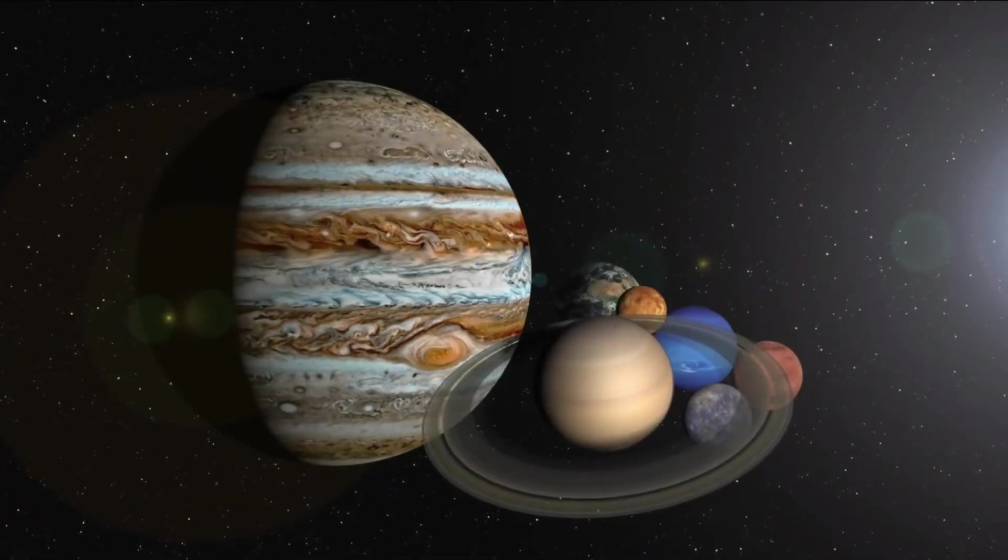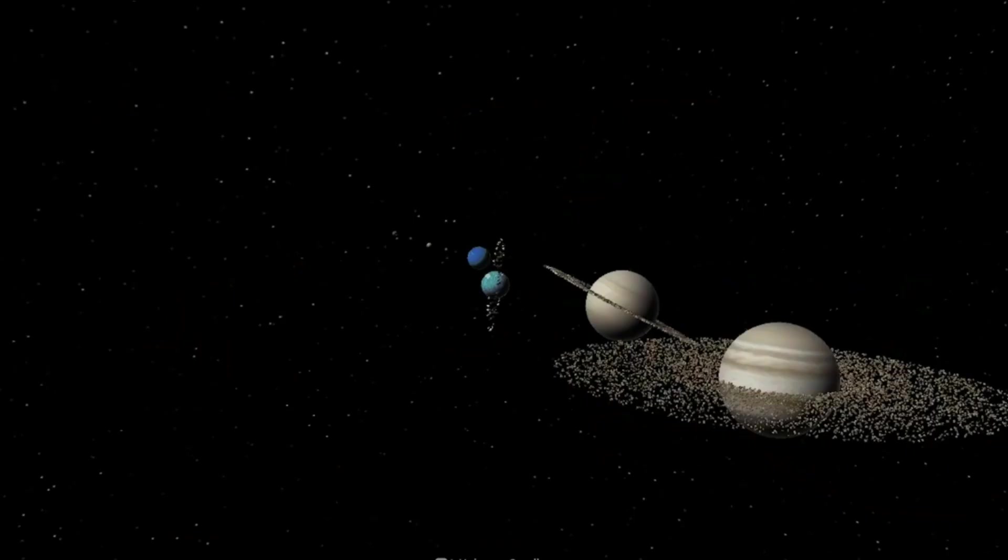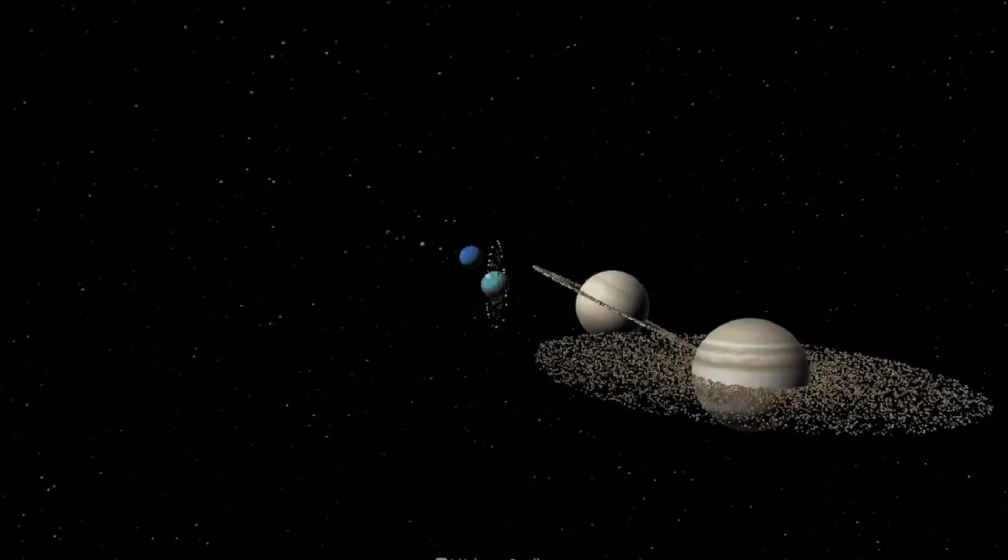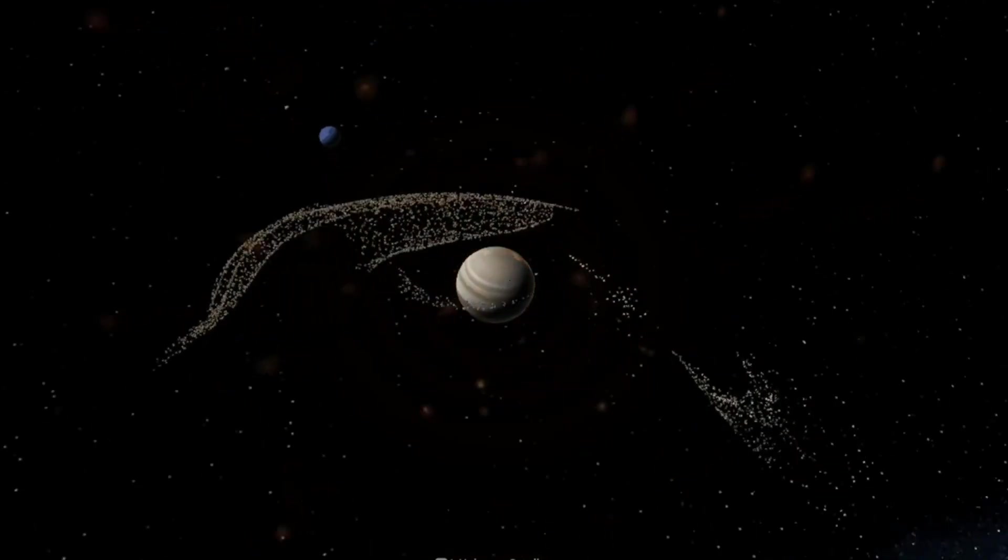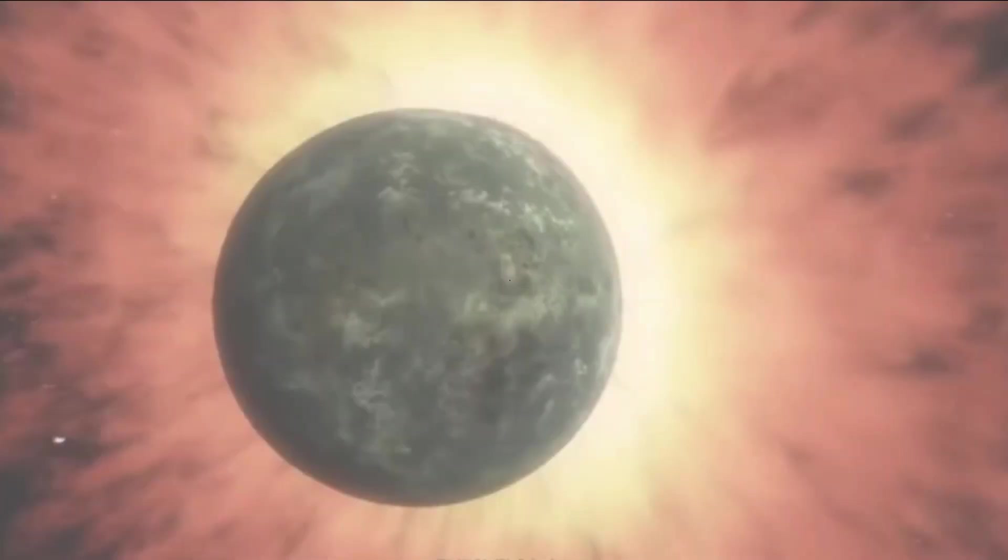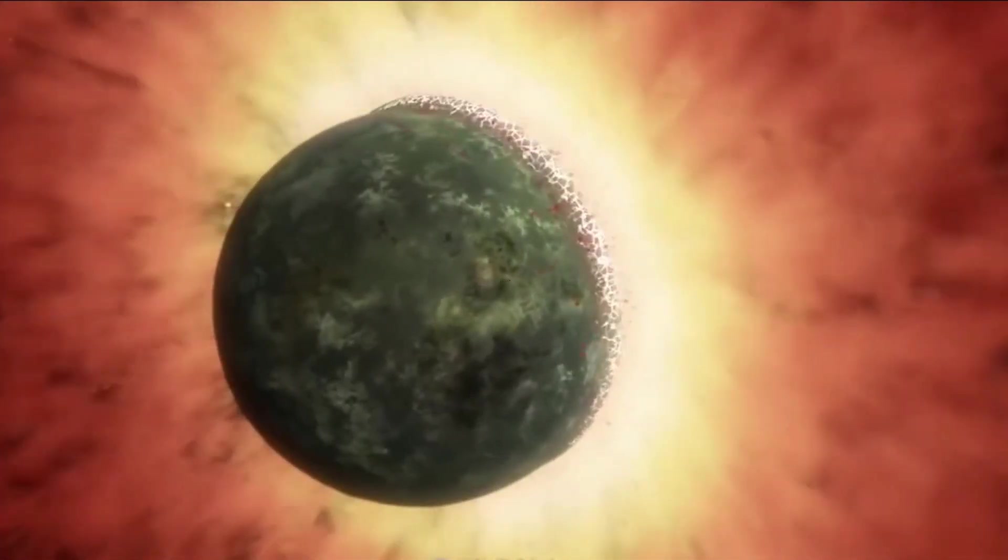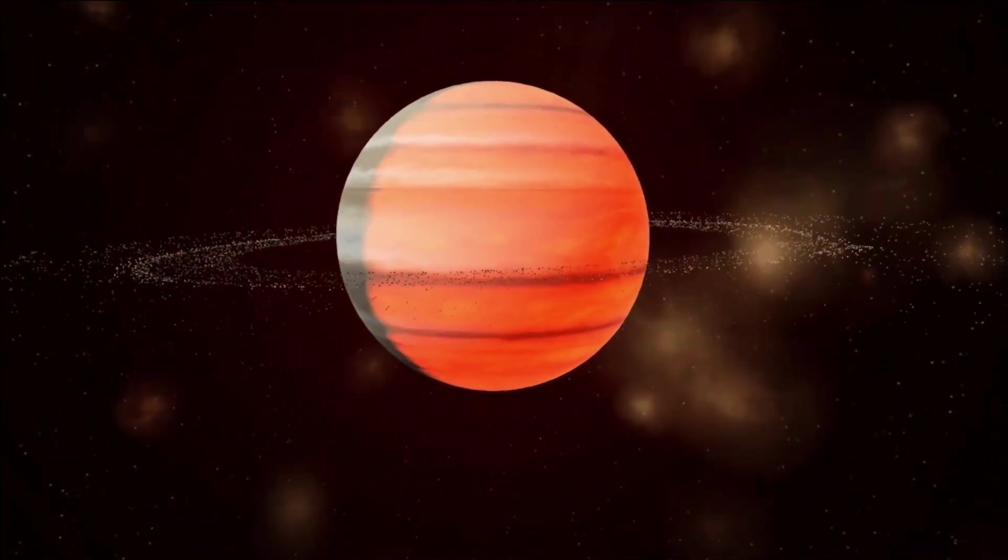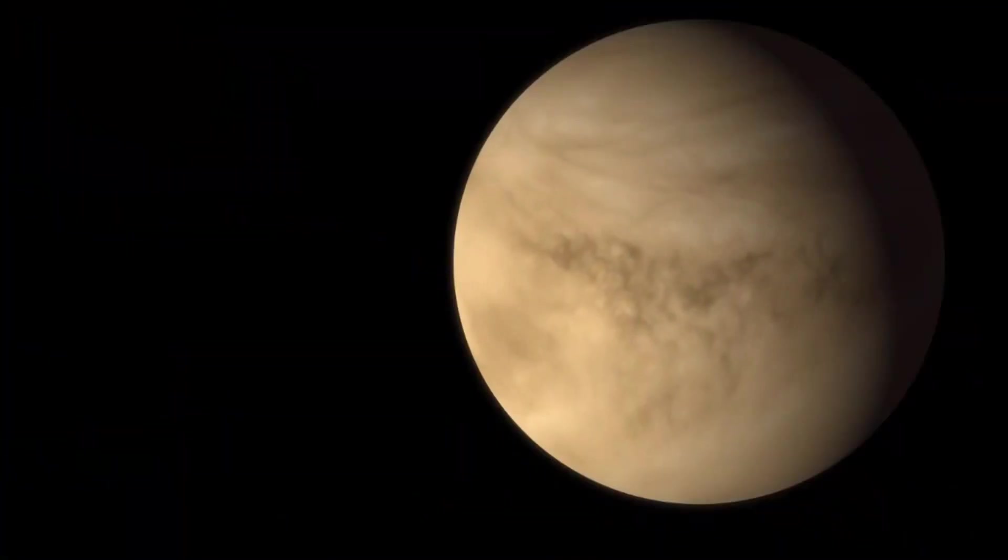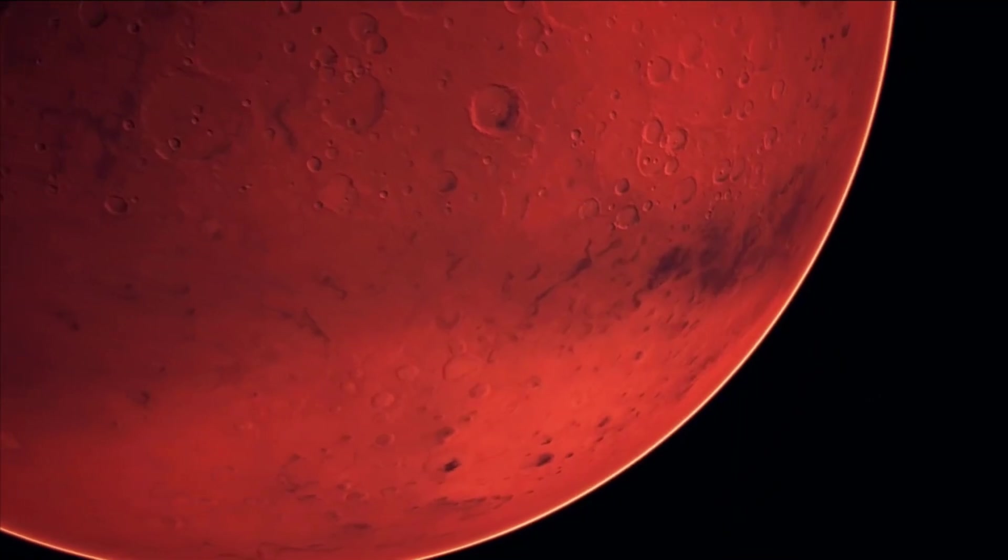The planet is also tidally locked to its host star in a way that one hemisphere faces the star, while the other always stays on the opposite side. Due to this, it becomes a dramatically hot exoplanet with an average day temperature of 2400 Celsius. While at night, it is 1300 Celsius, definitely enough temperature to melt away very high melting point metals like iron.